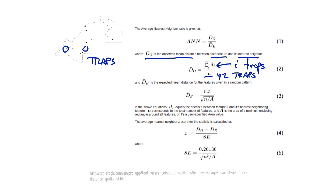Likewise these two points. So overall, we're going to calculate the average distance of all those nearest neighbors. We calculate that for all of the individual points, then divide by the sample size, and that gives us our D observed.